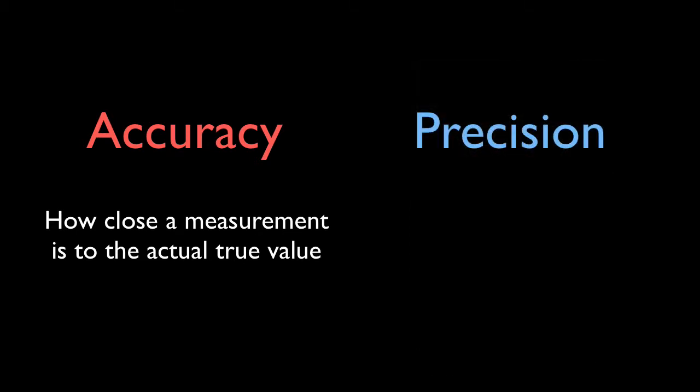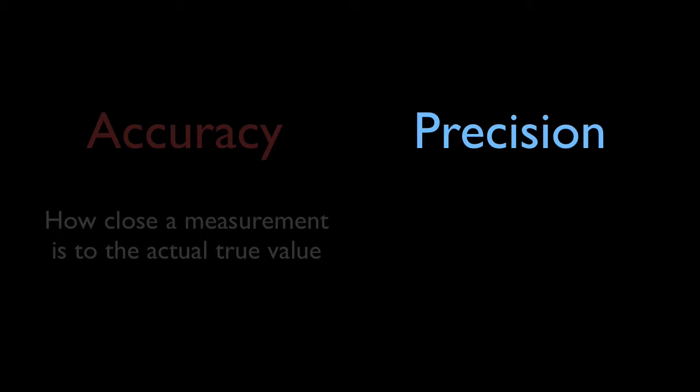I think it's fairly accurate to say that the concept of accuracy is fairly straightforward. The idea of precision, however, is a bit more involved. Precision is how close measured values are to each other.